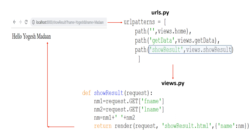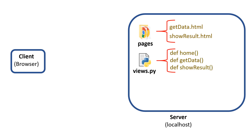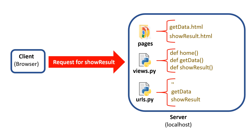This is how the communication among different files and functions takes place. To summarize: in the folder pages there are two HTML files — getdata.html and showdata.html. Views.py contains three functions: home, getdata, and showResult. urls.py contains a list urlpatterns which maps URLs to functions in views.py. The client requests the getdata form, the server responds by sending the getdata form to the client. The user fills in the form and clicks the submit button, which sends a request to the server to show the result, and the server responds by sending the hello page.